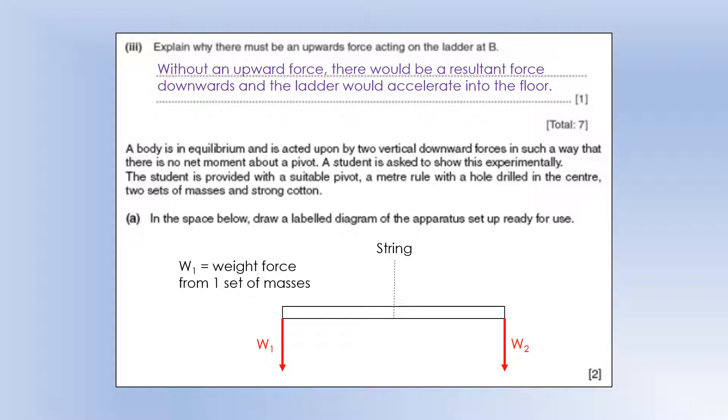And then we're going to have the sets of masses either side of the pivot so that they're both acting to rotate it in opposite directions. And we need to make sure their moments are equal to each other. And W1, as it says on the diagram, is the weight force from one set of masses. W2 is the weight force from the other set of masses. And the weight force times by their distance from the string should be equal to one another.